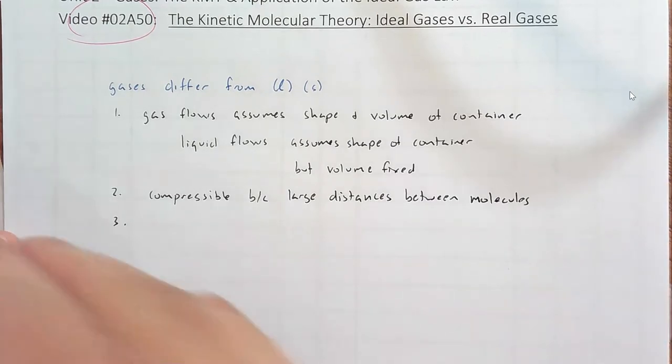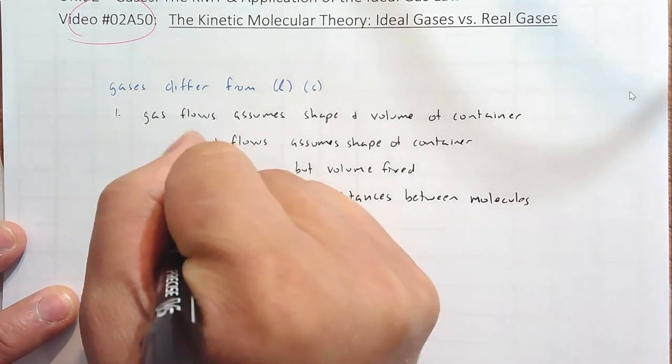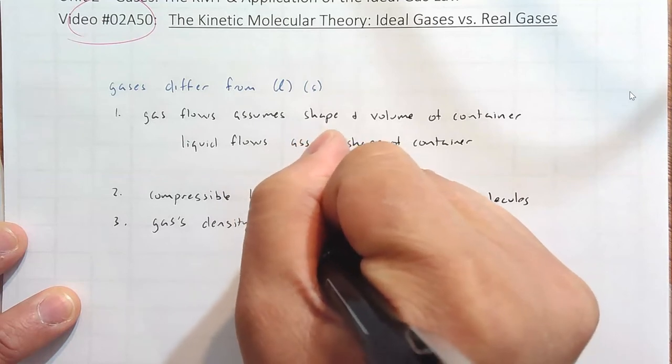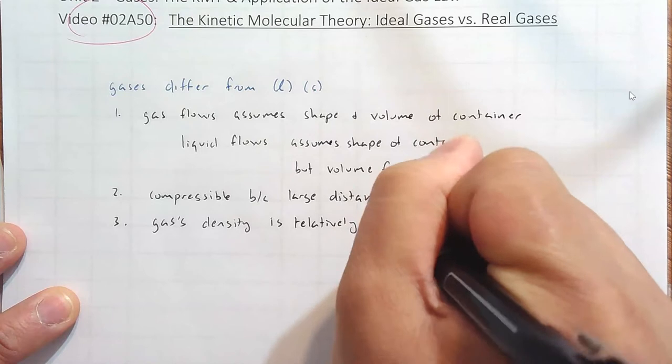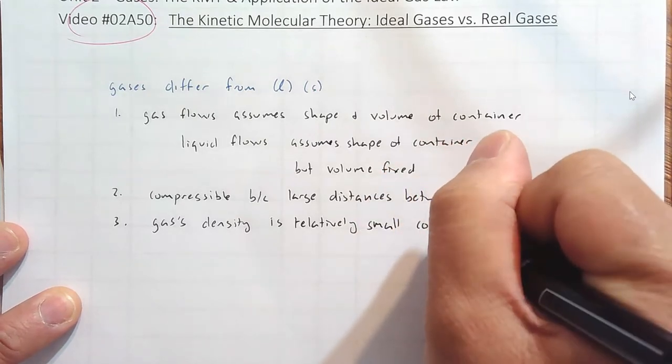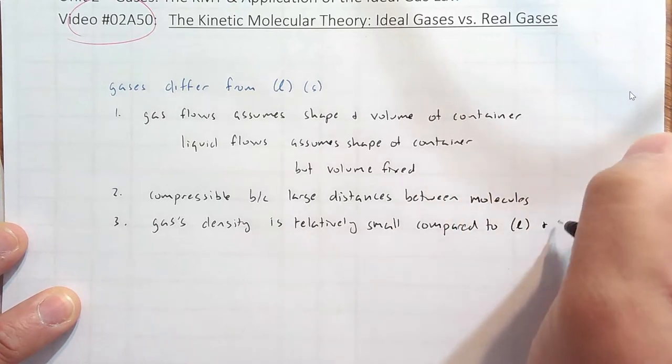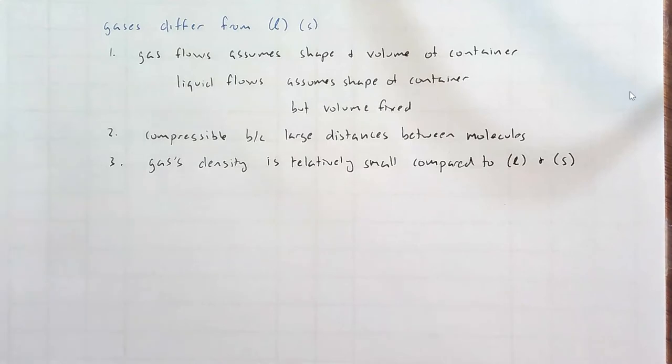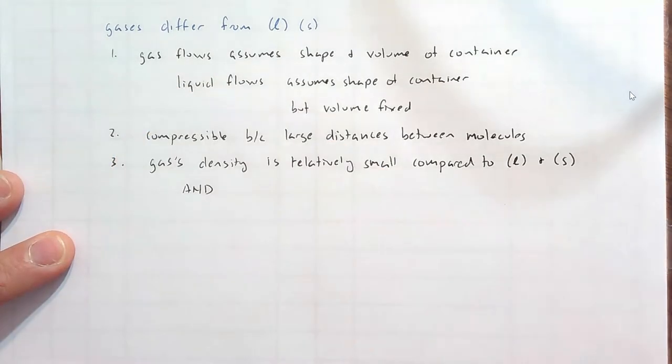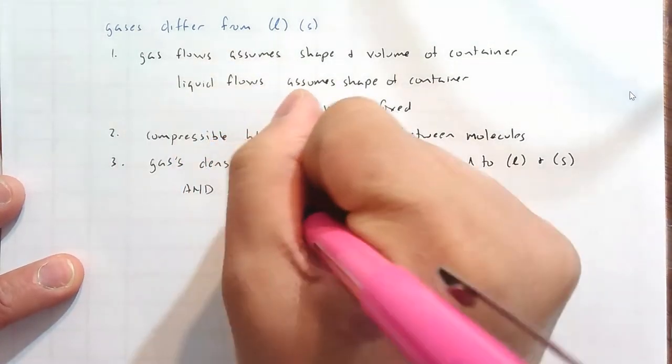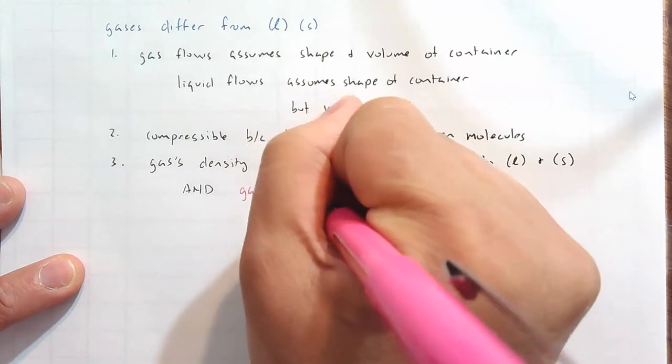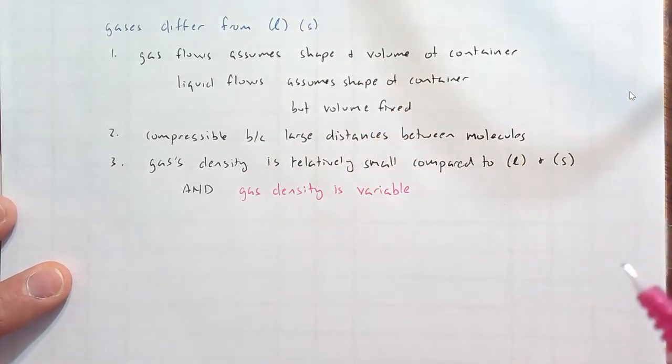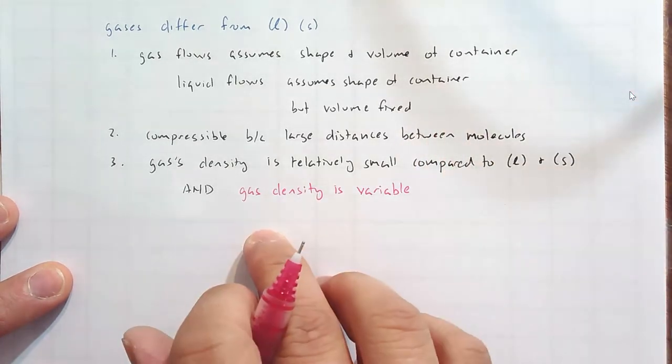Number three, gases' density. A gases' density is relatively small compared to liquids and solids. And density is very variable. It changes pretty easily. Because, since volumes are variable, the densities are variable also for gases.